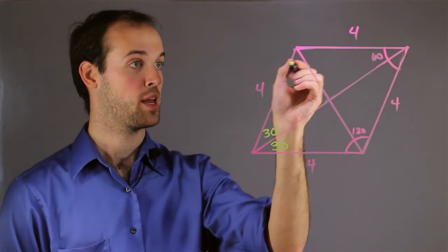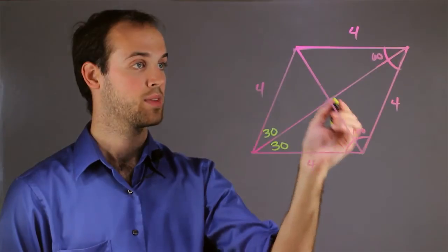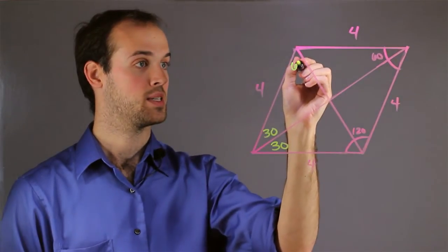And now, same thing for up here, I know that this angle in entirety is 120, so I know that when bisected it must be 60.